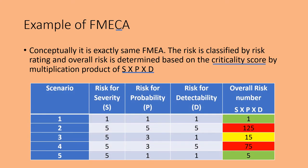Let us see this example using the same five scenarios from the previous slide. Here you give a scoring between 1 and 5, with 1 being the lowest risk and 5 being the highest. In scenario 1, severity, probability, and detectability are all low — all scored 1 — so 1 × 1 × 1 = 1. In scenario 2, severity, probability, and detectability are all at maximum — 5 × 5 × 5 = 125 — that is high risk.